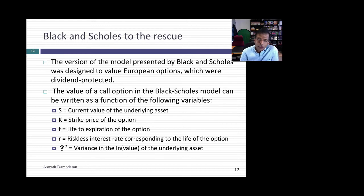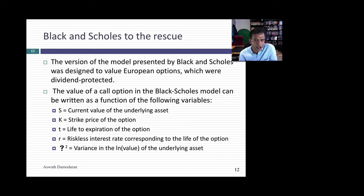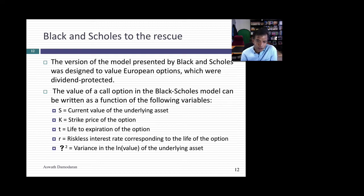The Black-Scholes model actually predates the binomial. In the Black-Scholes model, the value of a call option is a function of five variables: S, the value of the underlying asset; K, the strike price; T, the life of the option; R, the riskless rate; and sigma squared, the variance in the value of the underlying asset. But recall there were six variables that affect option value — the missing variable is dividends. The original Black-Scholes was designed to value dividend-protected options because it was mathematically easier.